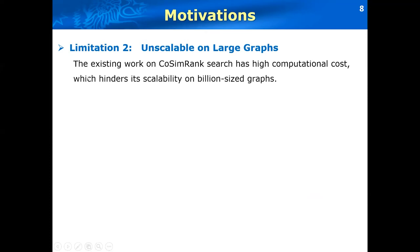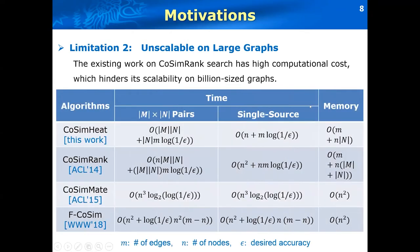The second limitation is the scalability on large graphs. Existing work on COSIM rank similarity search has high computational cost. Existing work for improving the COSIM rank similarities include SIN8 and F COSIM, and they are still rather costly and will require the quadratic memory space which hinders the scalability on billion-sized graphs.